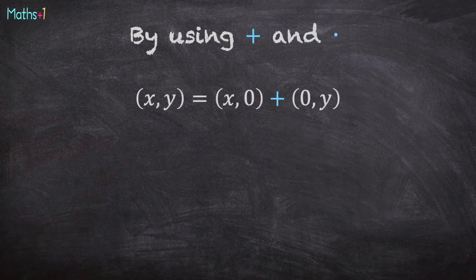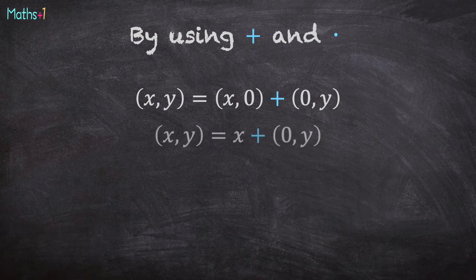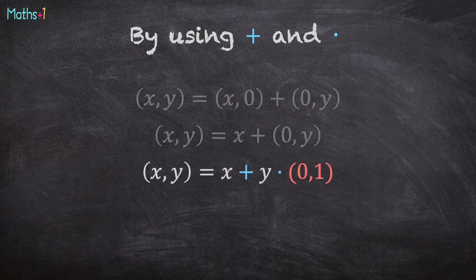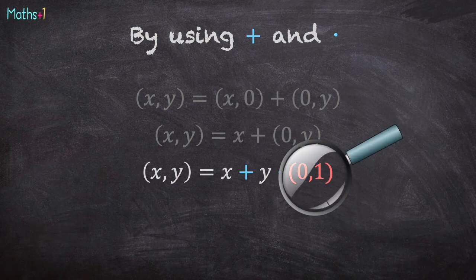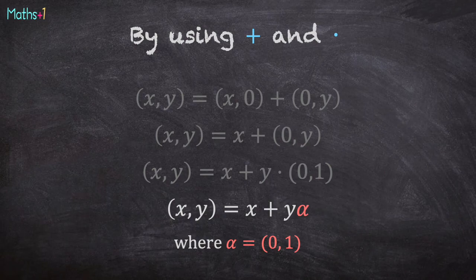By using plus and dot operations, we can write (x, y) is (x, 0) plus (0, y), and (x, 0) is x. What's about (0, y)? (0, y) is y dot (0, 1). (0, 1) is a special number. We write it alpha. Alpha is (0, 1).